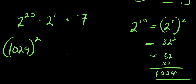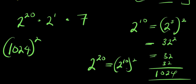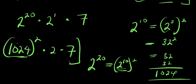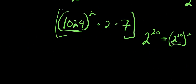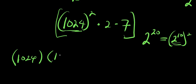Because I can write 2^20 as (2^10)^2. So we have 1024^2 times 2 times 7. From here, I need to find the value of 1024^2. I can compute it as 1024 times 1024.